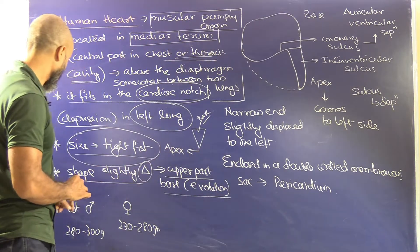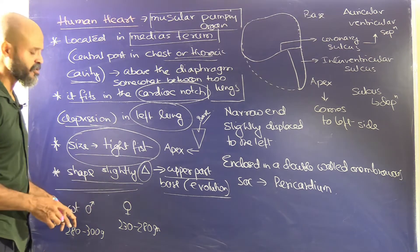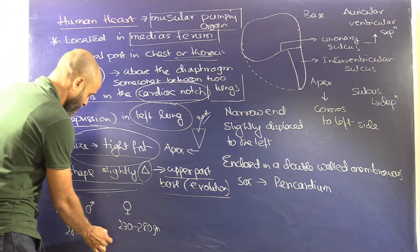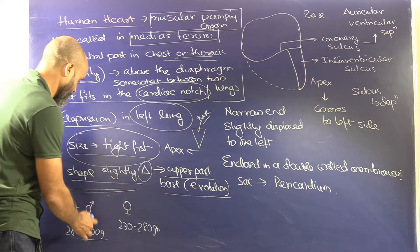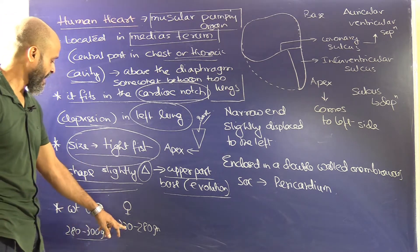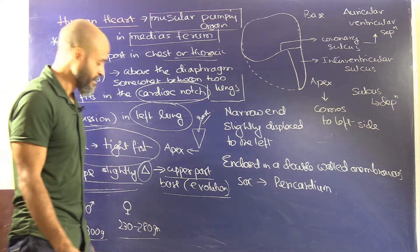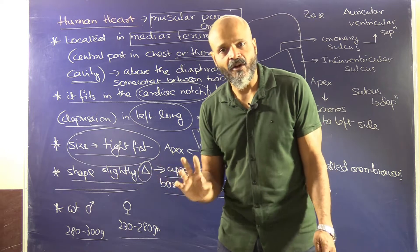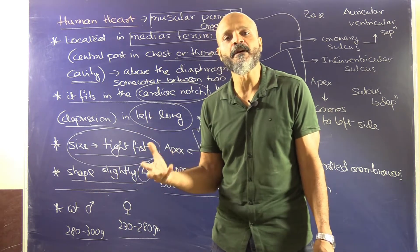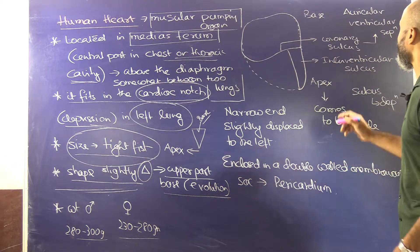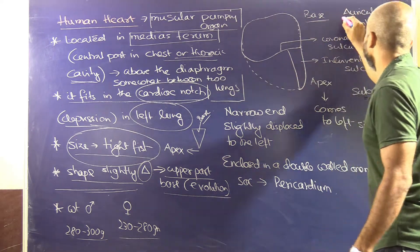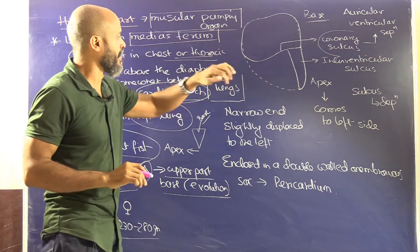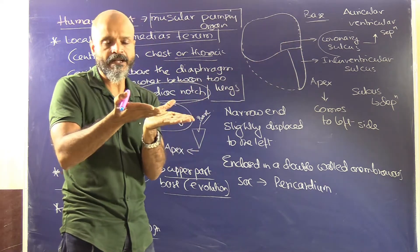The weight of the heart differs between males and females. In males it is approximately 280 to 300 grams, and in females it is approximately 230 to 280 grams. The heart is purely a mechanical organ concerned only with the pumping of blood.